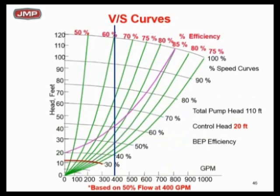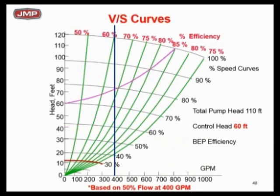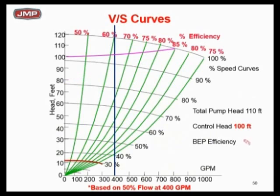Continuing to increase constant head: at 40 feet constant, BEP efficiency at half flow drops to about 72%. At 60 feet constant — 50 feet variable — best efficiency is now 67%, and at zero flow I need about 70% speed. At 80 feet constant, efficiency is about 65%; at 100 feet constant, about 62%. You can see the message: constant head will not change your speed, and BEP efficiency goes down as you increase the constant head. The only thing that changes speed and preserves efficiency is variable head.